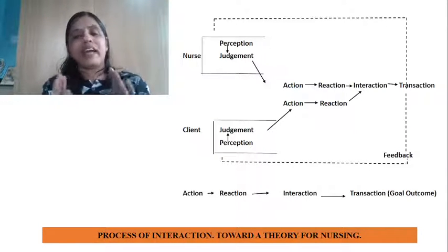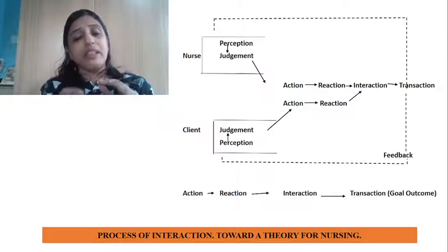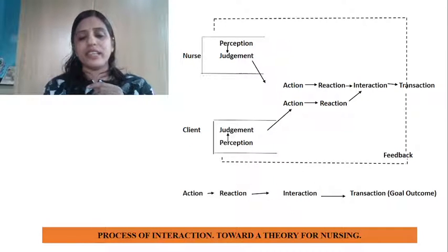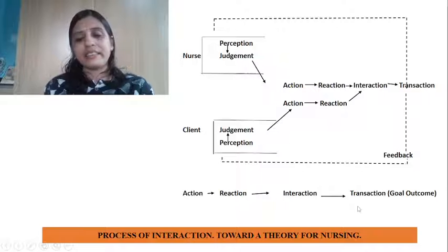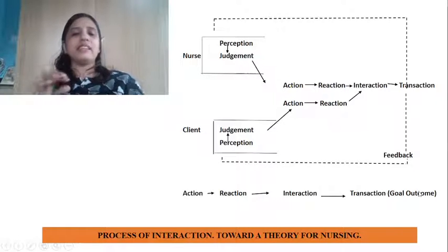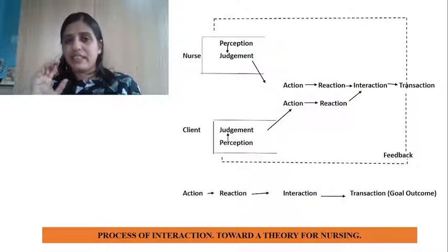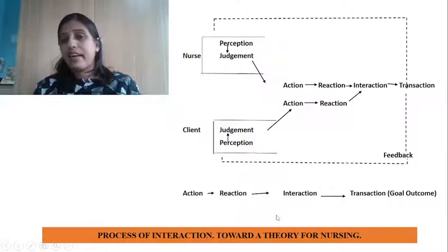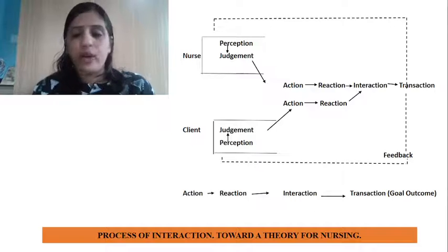King has summed this up in the process of interaction model. The base is action, reaction, interaction, and transaction, which helps in the attainment of the goal. The main words in her theory are: action, reaction, interaction, transaction leading to goal attainment.